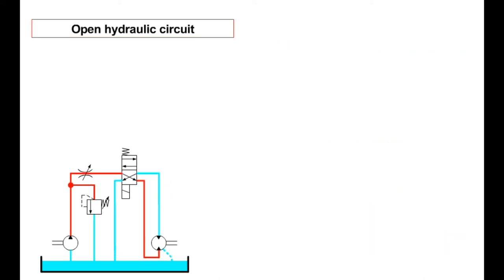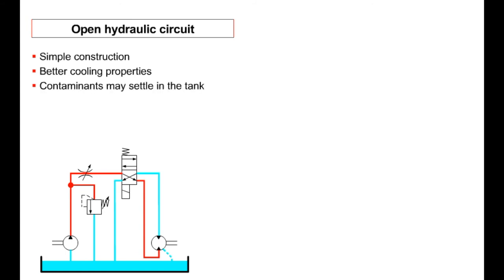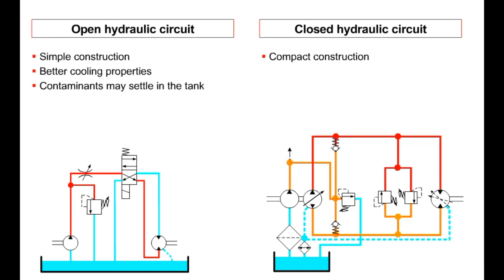An open hydraulic circuit is standard in many applications from stationary machine tools to winch and hoist transmissions, and is distinguished by its simple construction. The return flow of pressure fluid from the consumer into the tank is an advantage, as the fluid can cool off before being drawn back into the pump. Contaminants can also settle in the tank and are not reintroduced into the circuit. The small tank of a closed circuit allows compact construction, and the fixed pressure fluid ensures quiet operation. Closed systems also offer good control properties and favorable volumetric efficiency.